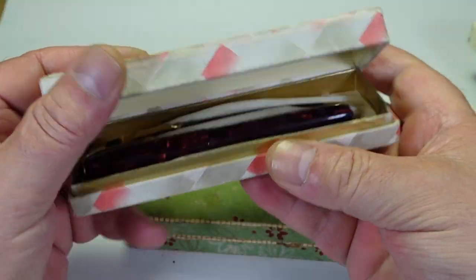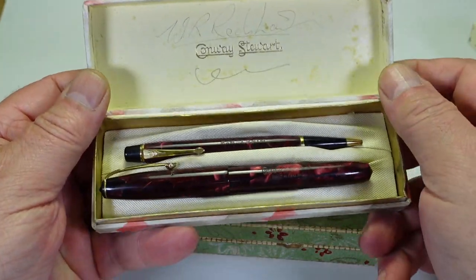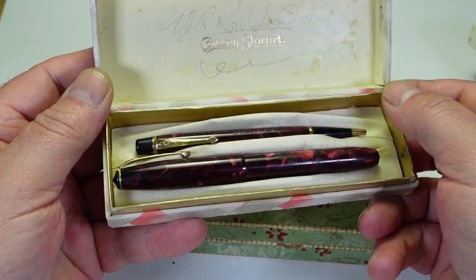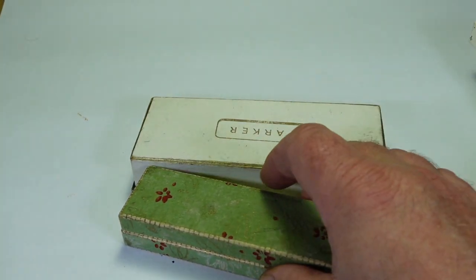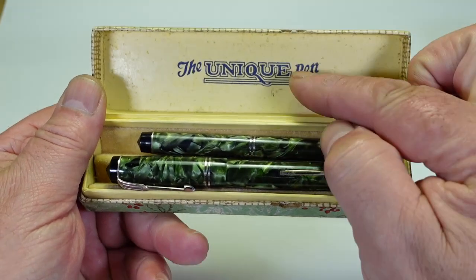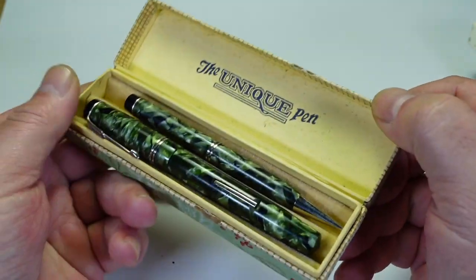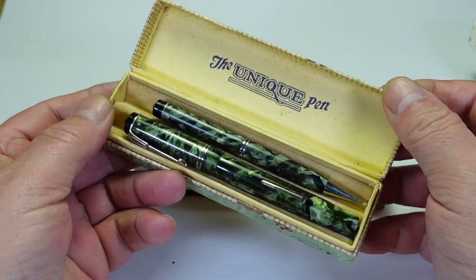So without further ado, let's get some of them over here. Right, we've got a nice box here. What's in here? Let's open them up. There we go, a nice Conway Stewart fountain pen and pencil. Oh look, they're very nice. Look at that, a unique fountain pen and pencil in this lovely green marbling, very nice indeed.